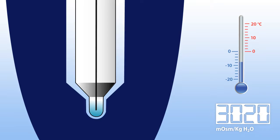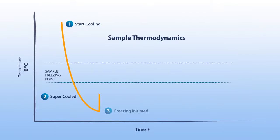This rate of cooling is tightly controlled by the osmometer. While the sample is in the supercooled state, a physical shock, called the freeze pulse, is introduced to the sample.